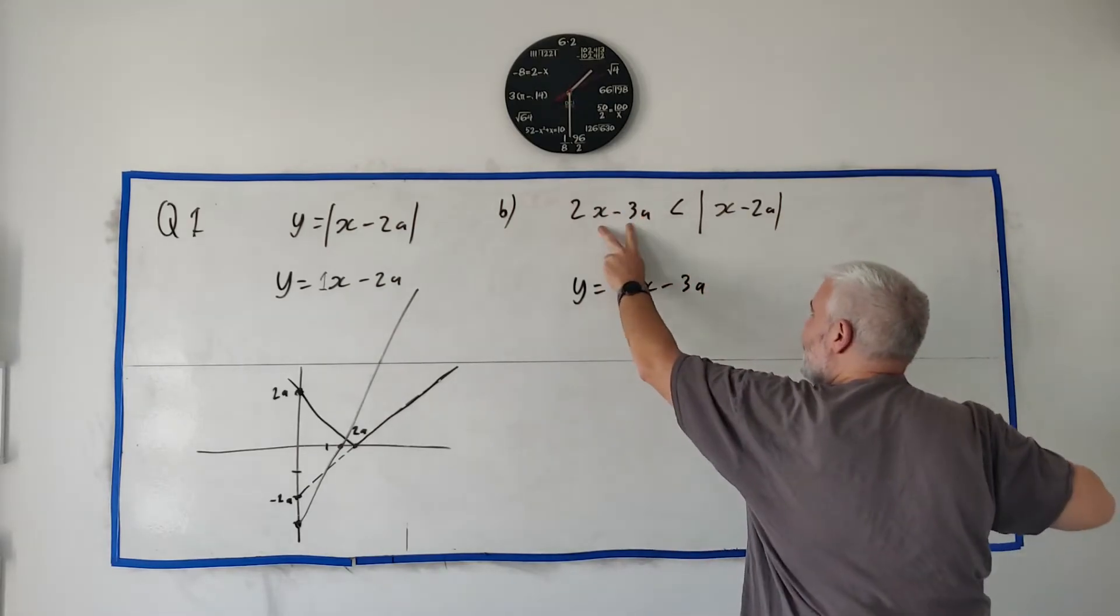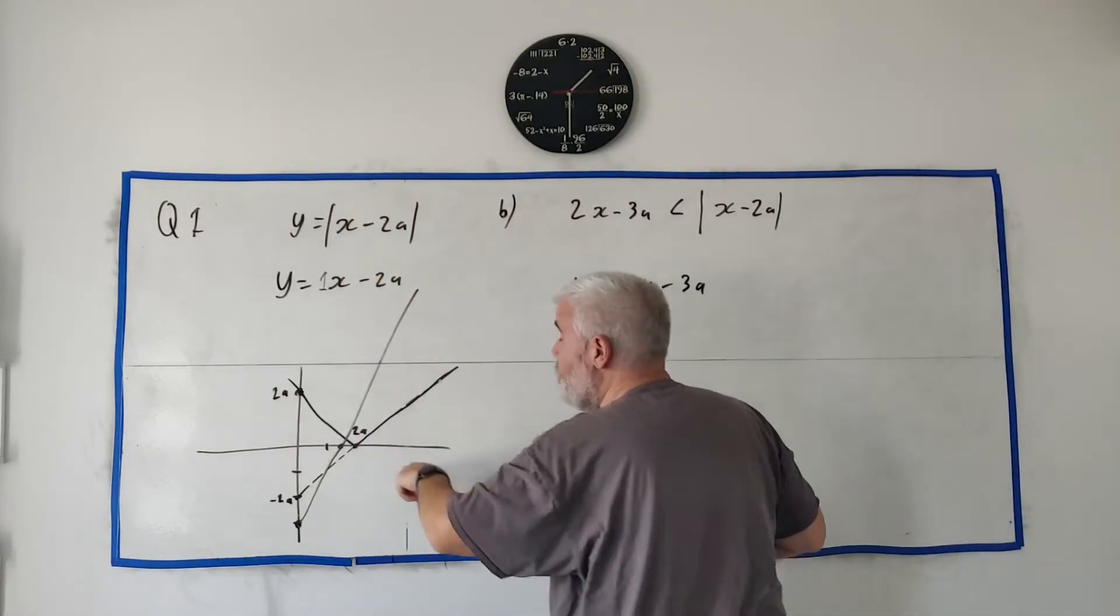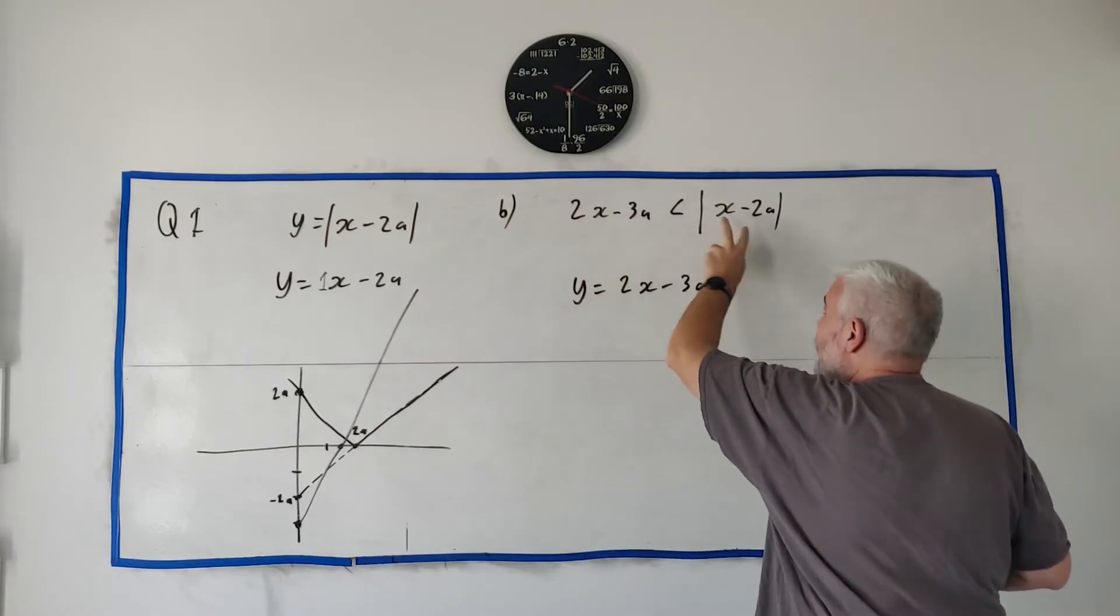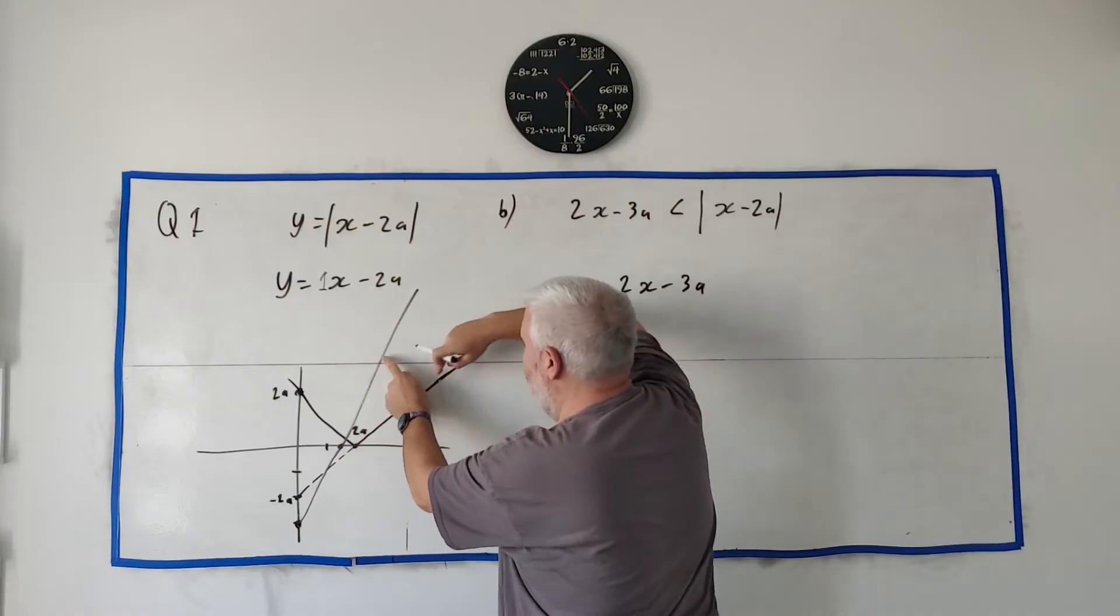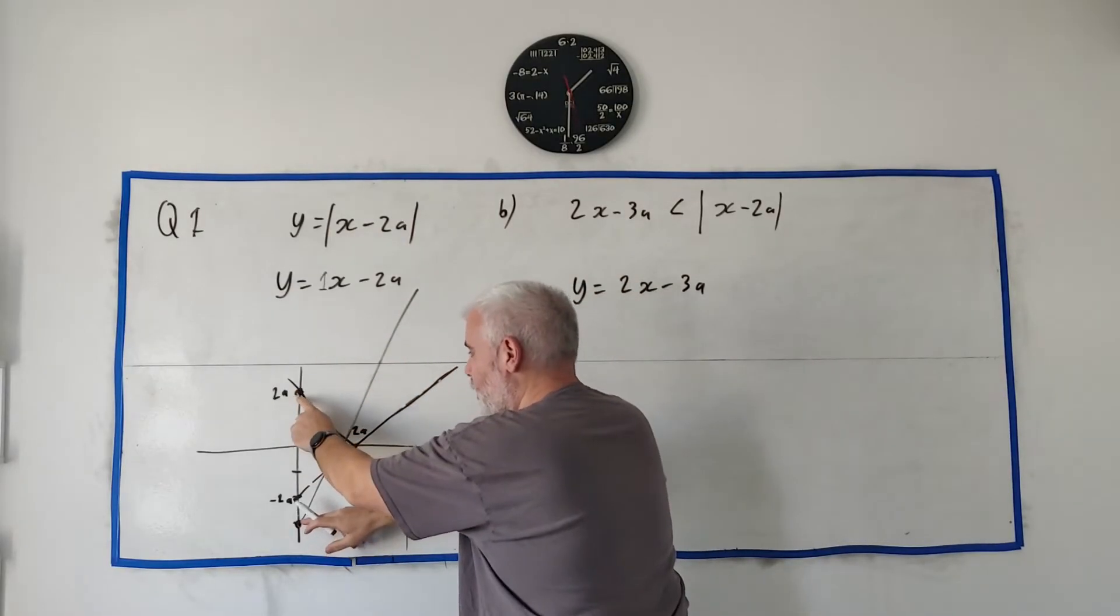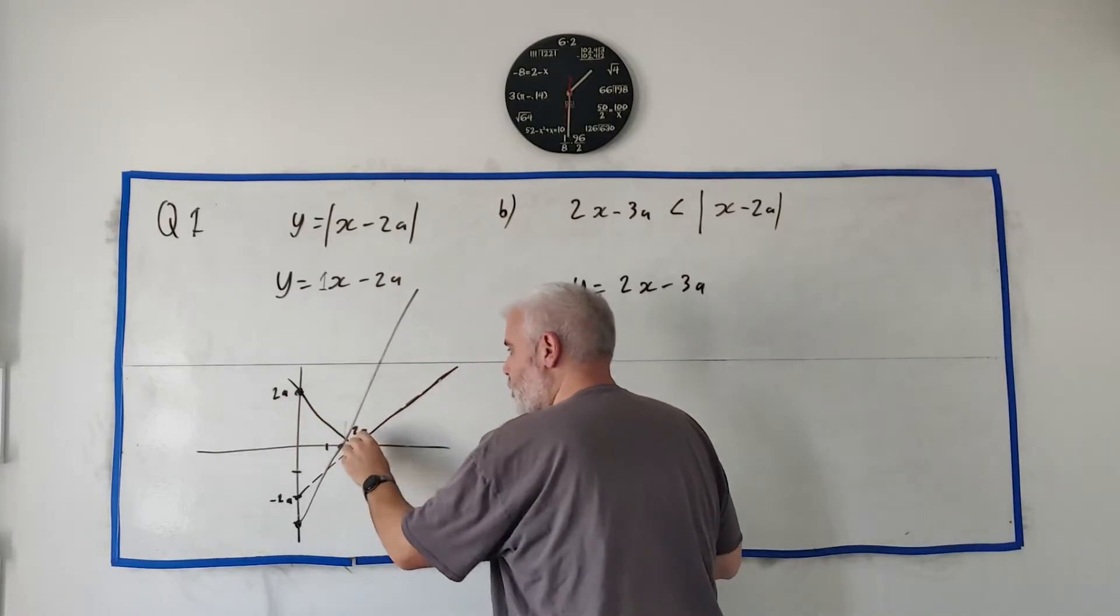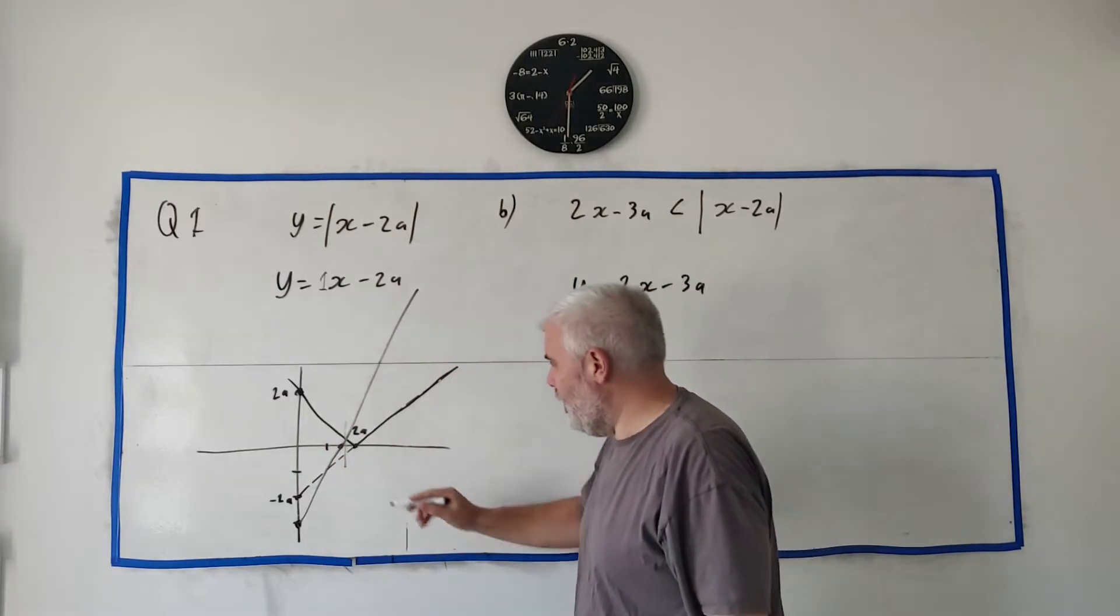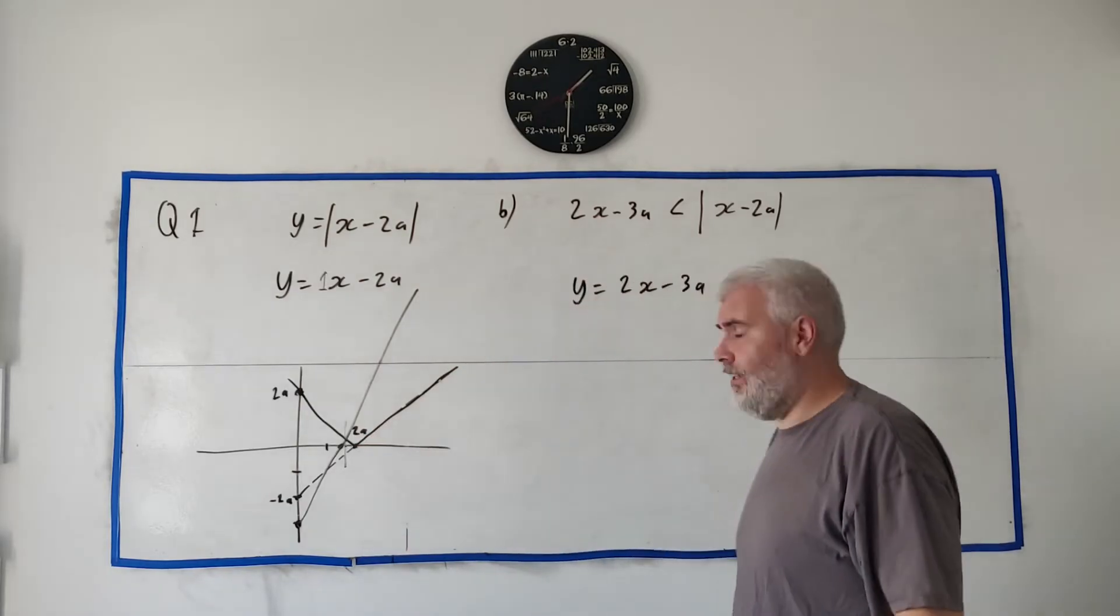Now we can actually read this first one up here with the drawing quite easily. It's saying, when is this one less than this one? Remember, this one is the V shape and this is the straight line we just drew. When is this below this? So here they are. When is this one below this one? Everywhere left of this line. Everywhere left of there. Everywhere right of it, it's bigger. So all we need to know is what's this point here or what's the x value at this point.